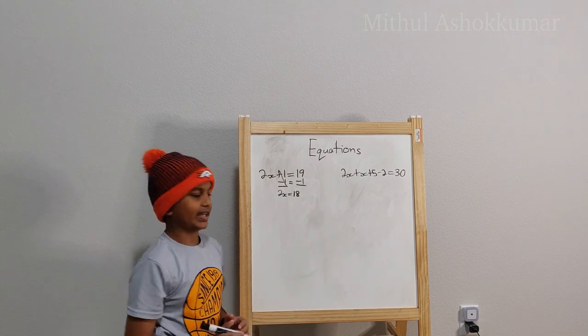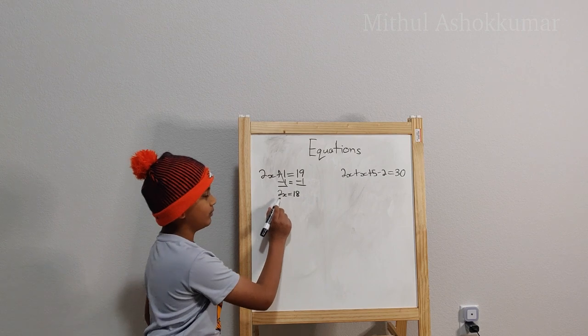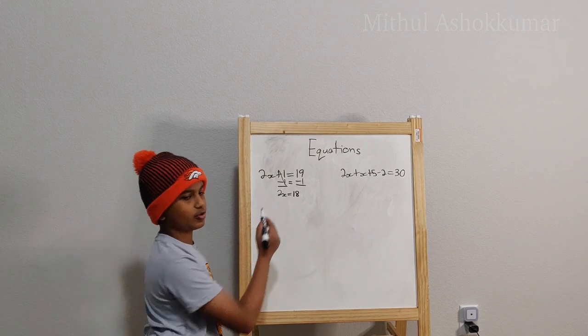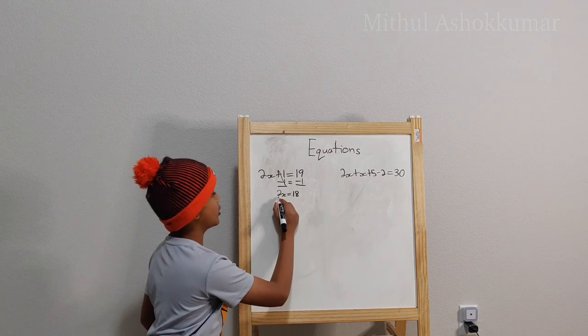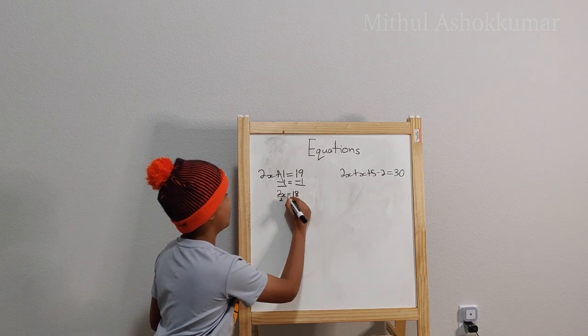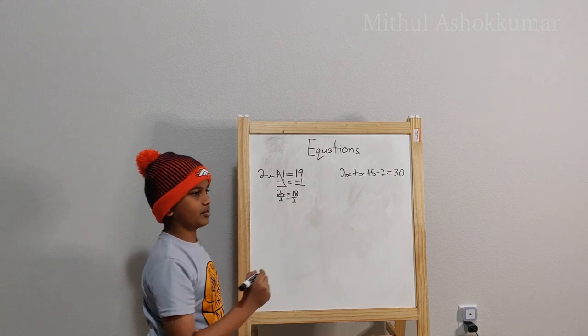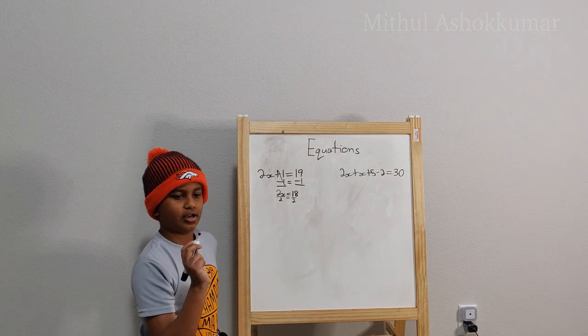Now how do I get x by itself? Well as you can see we have a 2x which is the same as 2 times x. So you can divide this by 2 and remember if you do something on one side, do it to the other.